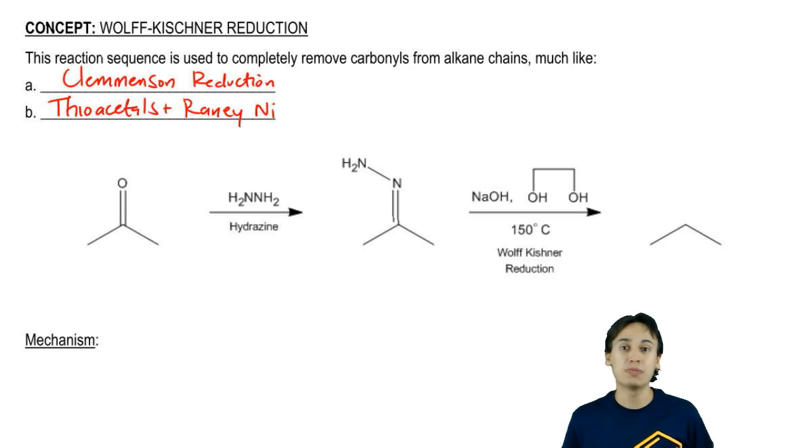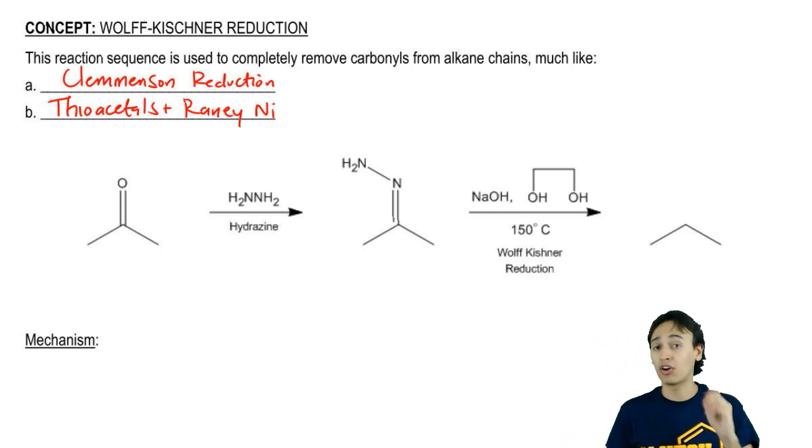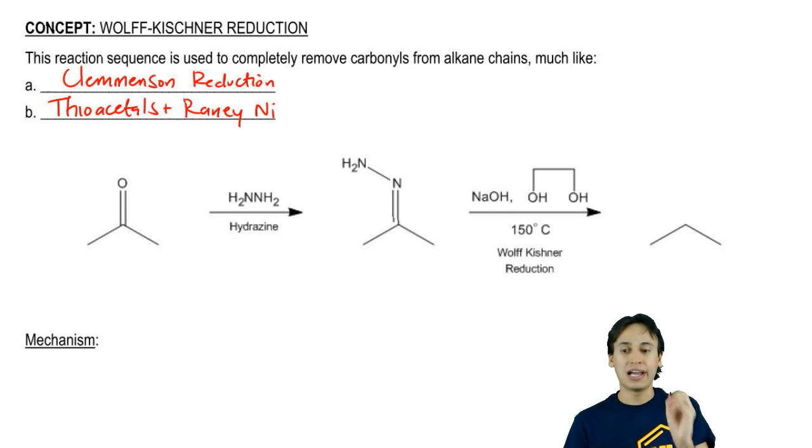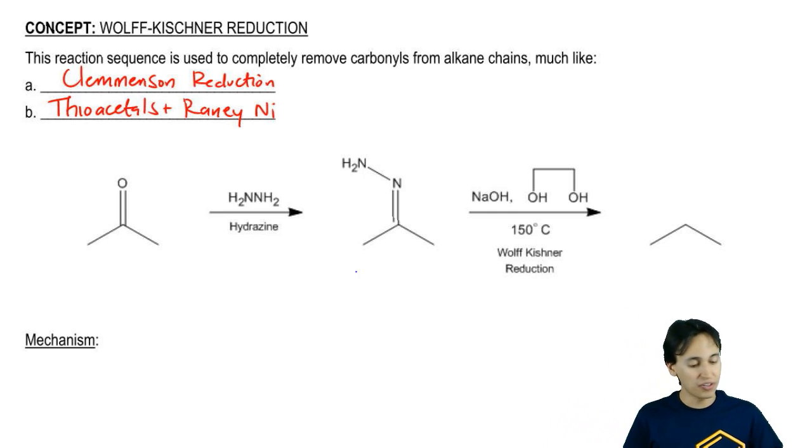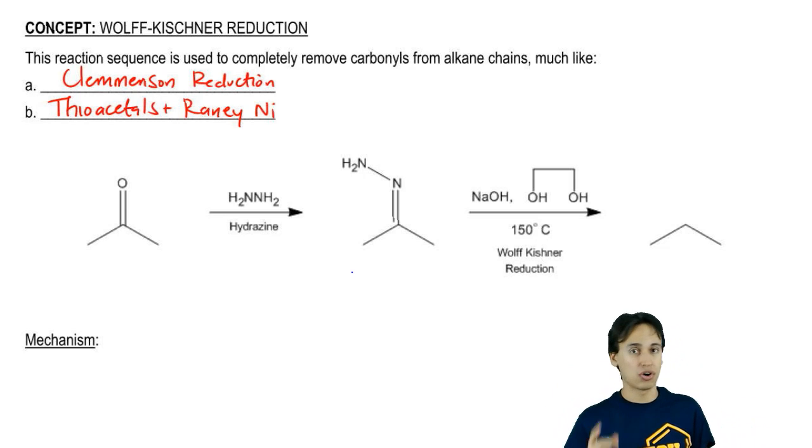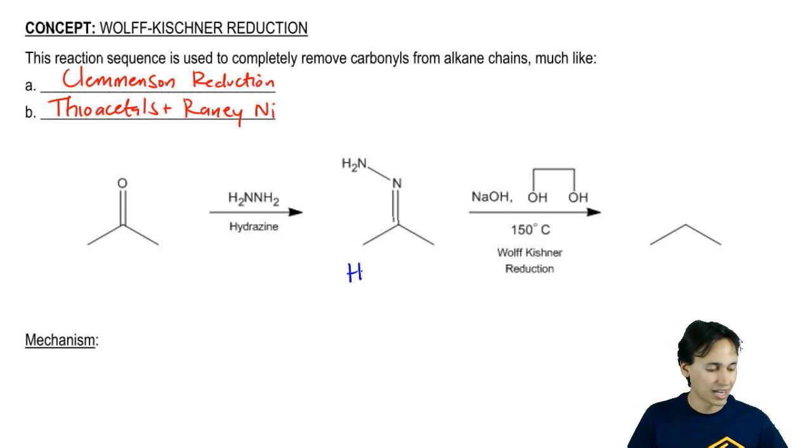The way we do this is by using an ammonia derivative to make an imine derivative. Let's see how. What we do is we take a carbonyl, react it with hydrazine. Hydrazine is going to add and make an imine derivative. Specifically, the imine derivative that we make is called hydrozone.